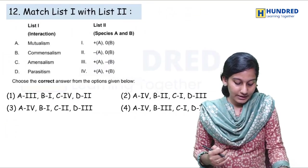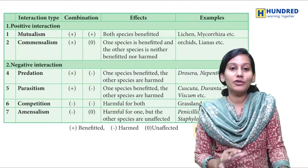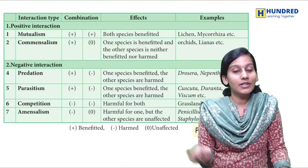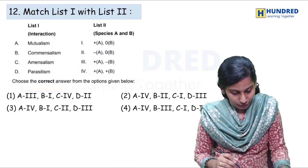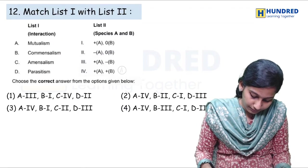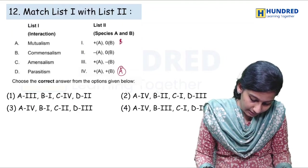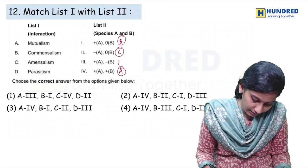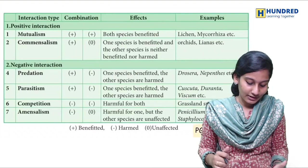Next: mutualism, commensalism, amensalism, and parasitism — this is actually given in a table in the book on page number 118. They have given a beautiful table showing species 1 and species 2 interaction. Mutualism is plus and plus; commensalism is plus and zero; amensalism is minus and zero; parasitism — option 3 is the right answer. From the table in our book, with the symbols, we can answer this question.